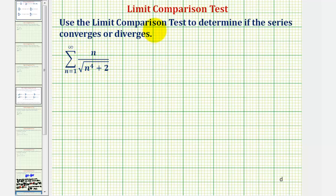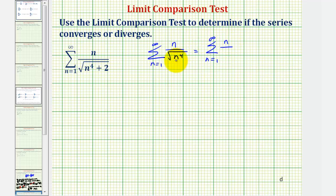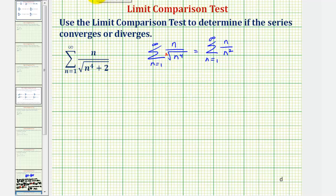Notice how this series resembles the summation from n equals one to infinity of n divided by the square root of n to the fourth. We can simplify this: the square root of n to the fourth equals n squared, using the property that the nth root of a to the m equals a raised to the power of m over n. So n divided by n squared simplifies to one over n, giving us the summation from n equals one to infinity of one divided by n.